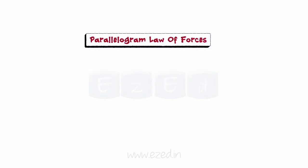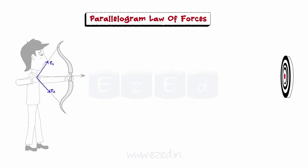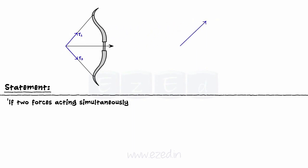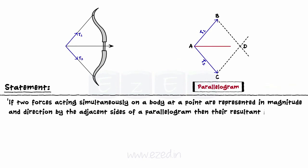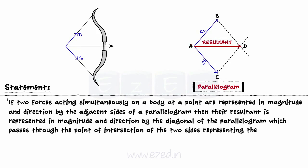Parallelogram law of forces. This law can be applied to understand the sport of archery. When an archer pulls the strings of the bow, he applies tensile forces on the bow strings and not directly on the arrow, but the arrow still moves forward with high velocity toward the target — this is explained by the parallelogram law of forces. If two forces acting simultaneously on a body at a point are represented in magnitude and direction by the adjacent sides of a parallelogram, then their resultant is represented in magnitude and direction by the diagonal of the parallelogram passing through the point of intersection. Hence, the arrow is released at high velocity toward the target.